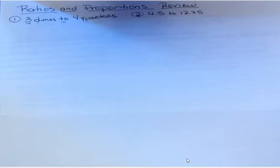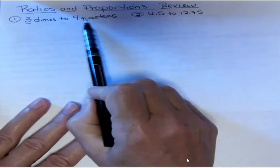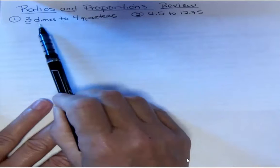Hi, it's Carly McEvoy. Today I'm talking about ratios and proportions, a brief review. If you want to write a ratio like three dimes to four quarters, you need to change those into the same unit.